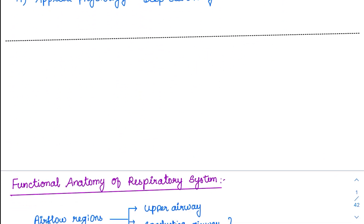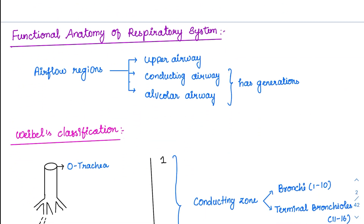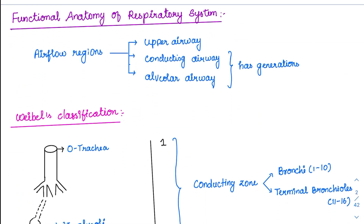Now coming to the functional anatomy of the respiratory system. Here we will not be dealing with the intricate lobes of the respiratory system — that will be dealt in anatomy — but what are the functional divisions? The functional division, the airflow regions, include the upper airways, then the conducting airways, then the alveolar airways.